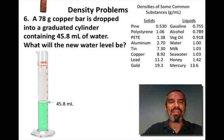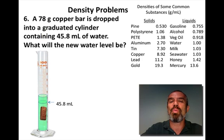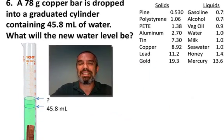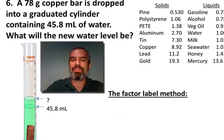Next problem. A 78 gram copper bar is dropped into a graduated cylinder containing 45.8 milliliters of water. What will the new water level be? So we're really trying to solve for the volume of that piece of copper, right? Because that will tell us how much the water level is going to go up by.